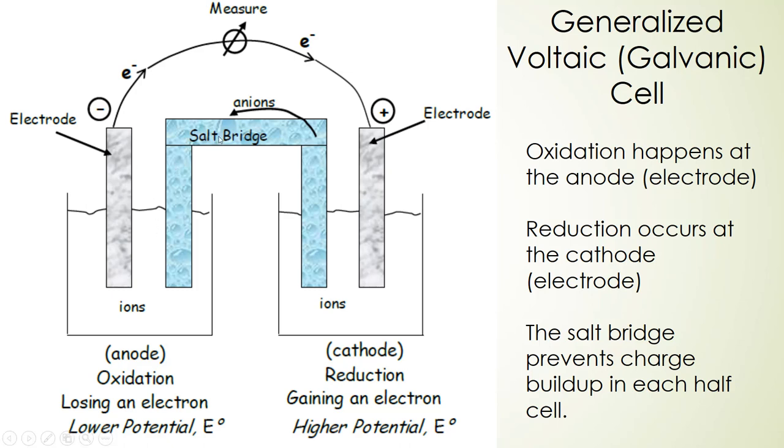Now this salt bridge here basically completes the circuit and prevents charge buildup in each half of the cells. If we didn't have the salt bridge then electrons would flow from the anode compartment to the cathode compartment and that charge would build up in the cathode compartment and the cell would stop. So just one last thing to make sure we know: electrons are going to go from the anode to the cathode in a galvanic cell.